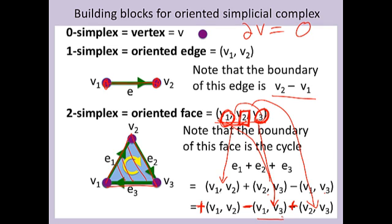Similarly, when calculating the boundary of the edge v1, v2: if I remove the odd vertex v1, I am left with plus v2; while if I remove the even subscripted vertex v2, I am left with minus v1. Note this also means that when I take the boundary of a simplex, the boundary will always be of dimension one less than the original object. So the boundary of a 2-simplex is a 1-dimensional cycle, the boundary of a 1-dimensional edge is the difference between 0-dimensional vertices, and the boundary of a vertex is empty.